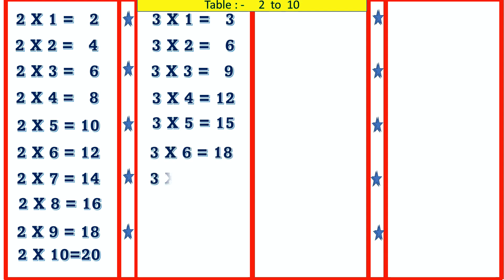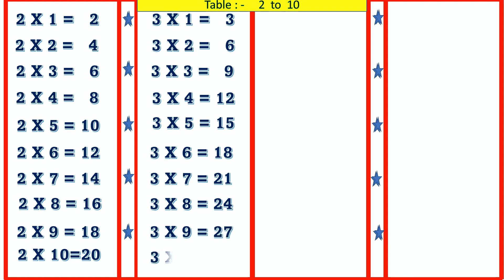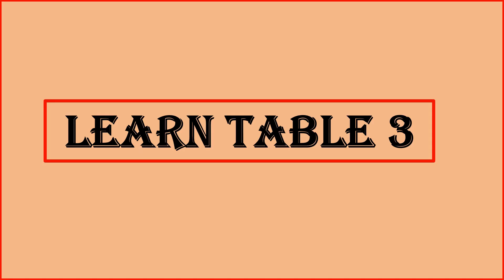3 6's are 18, 3 7's are 21, 3 8's are 24, 3 9's are 27, 3 10's are 30. Learn table 4.